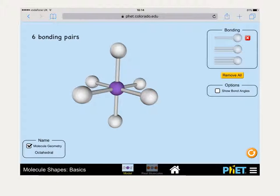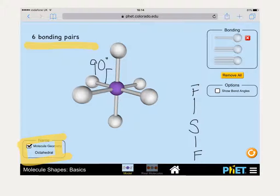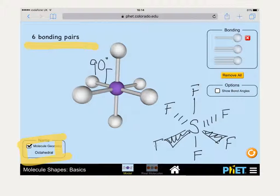Six bonding pairs of electrons gives us a shape which is octahedral. The bond angle in each case here is 90 degrees. We draw this for SF6 with sulfur in the center. We go up and down with our solid lines, then have two pointing away, and we have two wedges coming towards us. Each bond angle is 90 degrees.